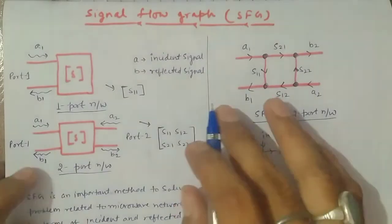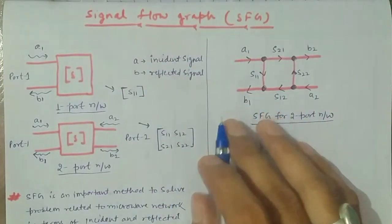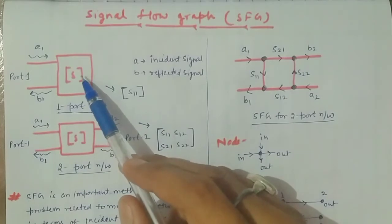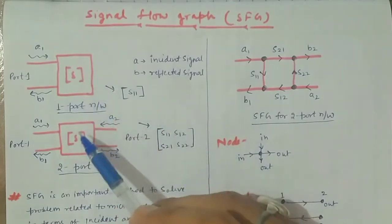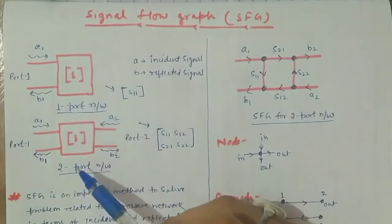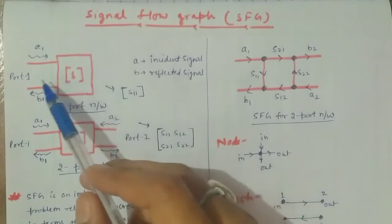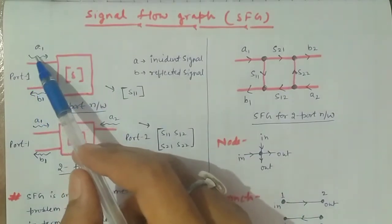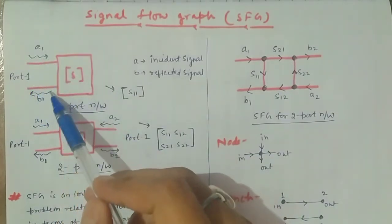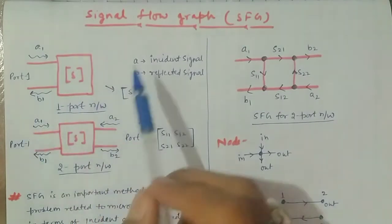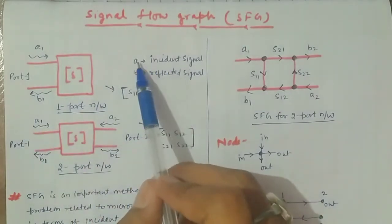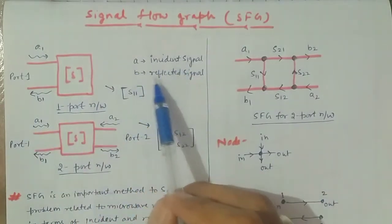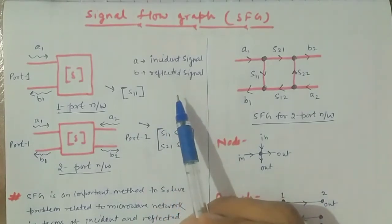So here as you can see, I have taken two examples: one-port network and another one is two-port network. One-port network means there is one port only, in which I have an incident signal and one reflected signal. A denotes the incident signal at that port and B denotes the reflected signal at the same port.